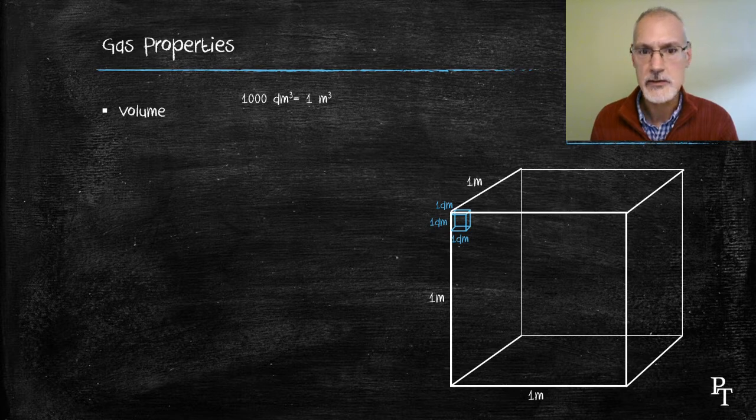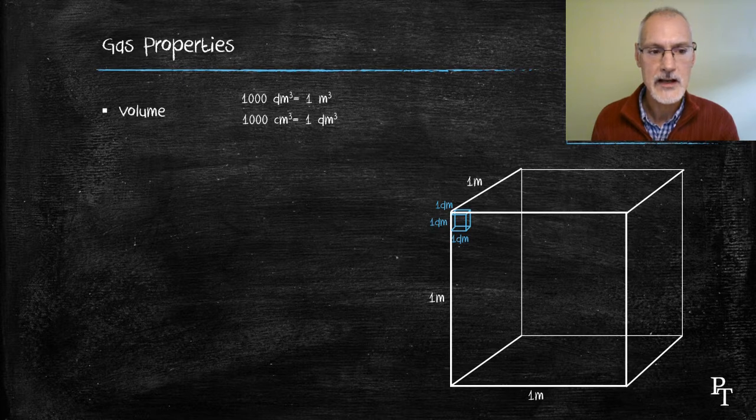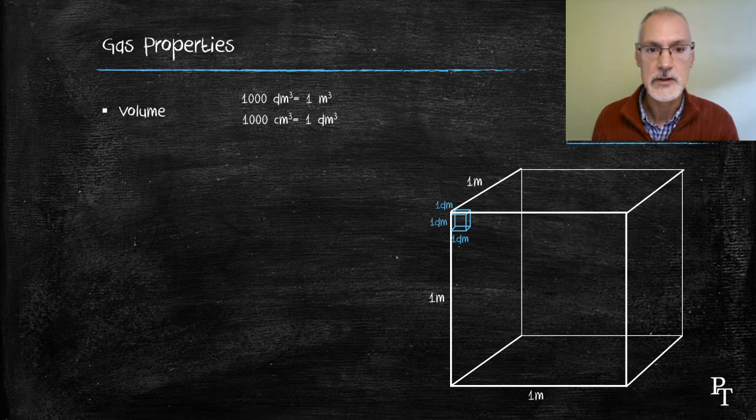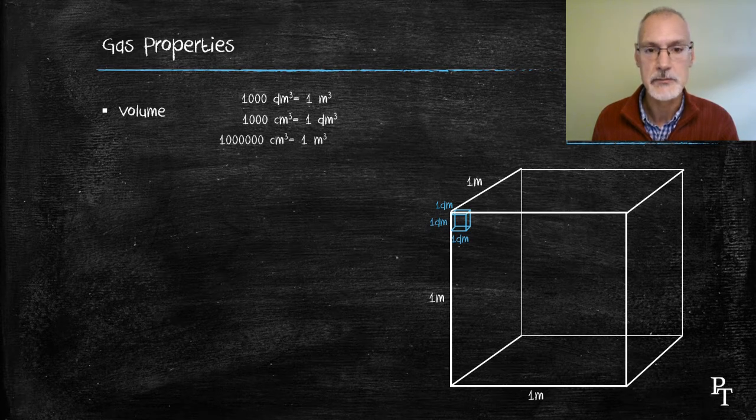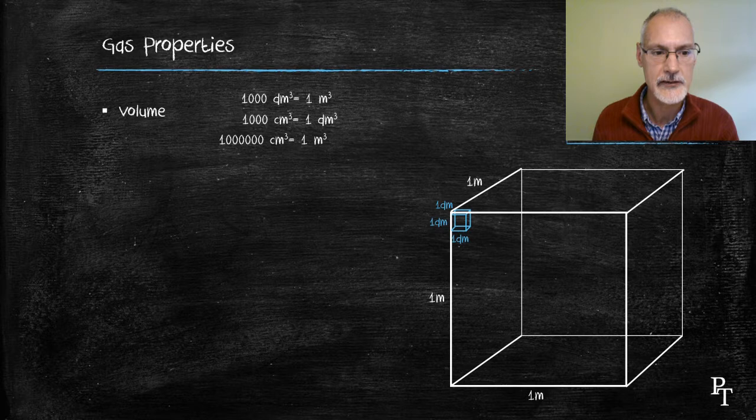You also might have heard the unit cubic centimeters or milliliter. Cubic centimeter and milliliter are the same size. And a thousand cubic centimeters equal one decimeter cubed or one liter. The connection between centimeters cubed and decimeters and meters cubed is a million. A million centimeters cubed equals one meter cubed. So we measure volume in all three of these units, and you should be able to change from one unit to the next.